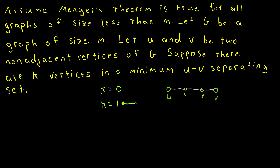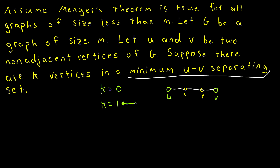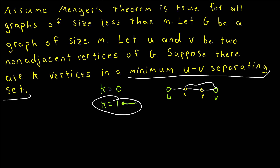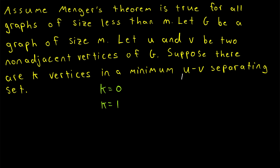If K equals 1, then there must also be a maximum of one internally disjoint u-v path. If we could find two internally disjoint u-v paths, then deleting a single vertex couldn't possibly disconnect u and v. So if the minimum number of vertices we need to delete is 1, there's certainly a maximum of just one internally disjoint u-v path. There may be more than a single path connecting u and v, but they can't possibly be disjoint since deleting a single vertex still has to disconnect u and v. Thus for the rest of the proof, we can proceed assuming that K is greater than or equal to 2.